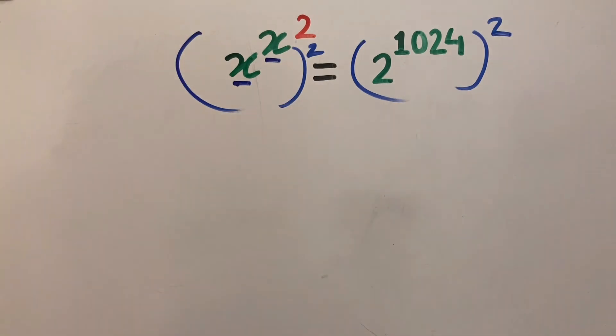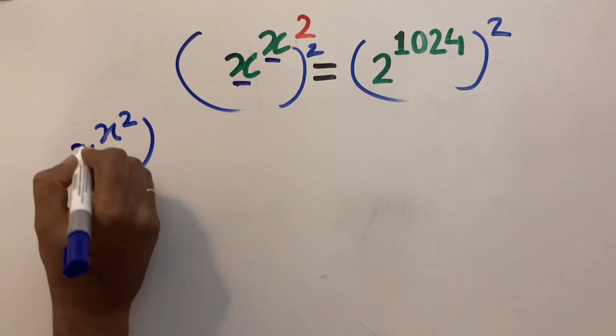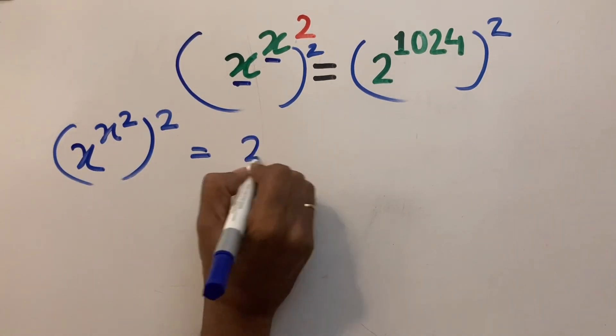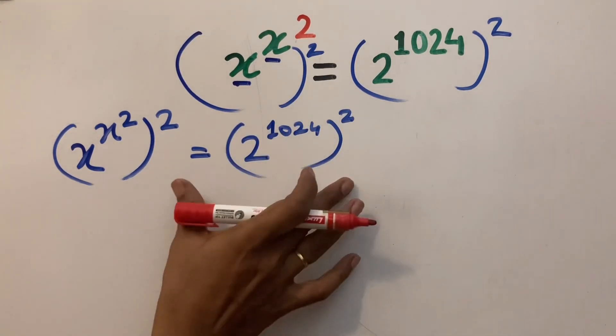So this becomes x to the power x to the power 2, all to the power 2, equals 2 to the power 1024 to the power 2.